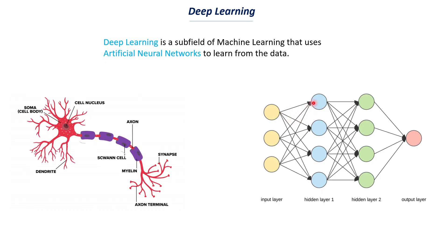If you look at a neuron, it receives information from multiple neurons in the previous layer — that's what those connecting lines mean. This is what we call a deep neural network. We also call these individual neurons perceptrons, and we can have multiple perceptrons or neurons in a single layer. Each neuron in a layer is connected to each neuron of the previous layer.